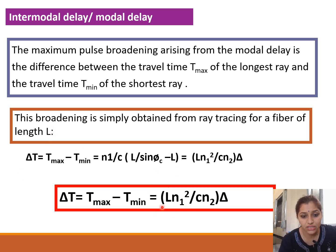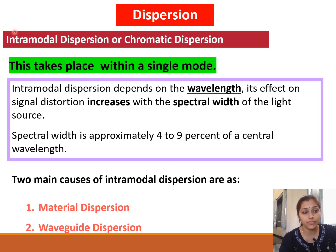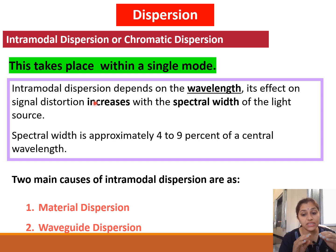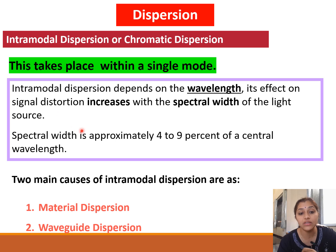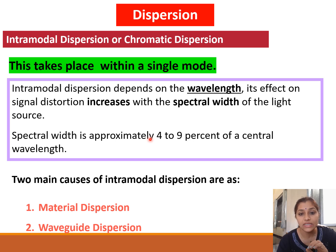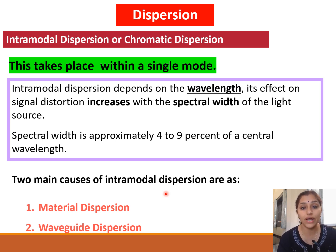The formula for modal delay uses L, the length of the fiber (e.g., 10 or 20 kilometers), N1 and N2 as the refractive indices of core and cladding respectively, and delta as the relative refractive index difference. Then comes intramodal dispersion — dispersion within a single mode. Intramodal dispersion depends on the wavelength of light, and its effect on signal distortion increases with the spectral width, which is approximately 4 to 9 percent of the central wavelength. The two main causes of intramodal dispersion are material dispersion and waveguide dispersion.